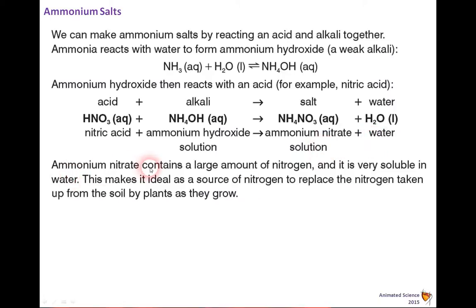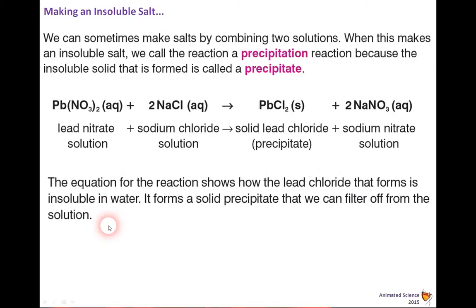Ammonium nitrate contains a large amount of nitrogen — there are two nitrogen atoms in the molecule — and it's very soluble in water. This makes it ideal as a source of nitrogen to replace what is taken up from the soil by plants as they grow.